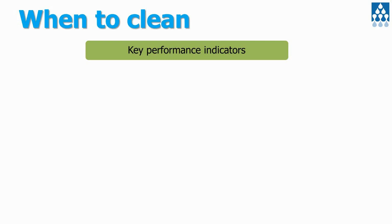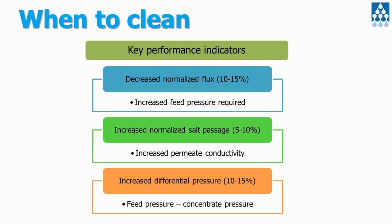The key to effective cleaning is knowing when to clean your membrane. There are several key performance indicators that are indicative of troubleshooting — and these are quite accepted in the literature. It's usually looking at a reduction in normalised flux by about 10 to 15%, or an increase in salt passage by 5 to 10%, or an increase in the pressure drop by 10 to 15%. These three key performance indicators are critical for timely and effective cleaning. If your problem exceeds this — for example, an increase in normalised flux by 50% — it may not be recoverable.